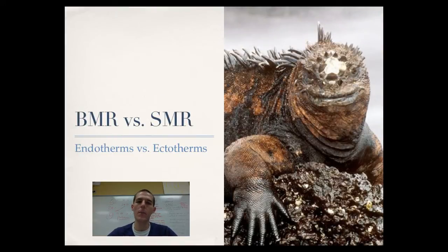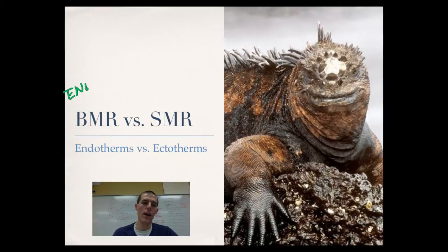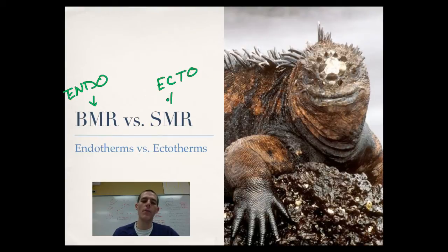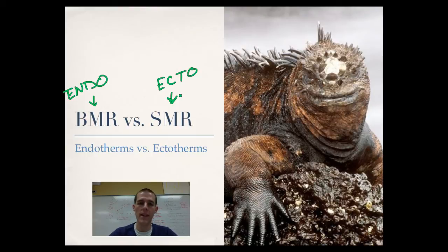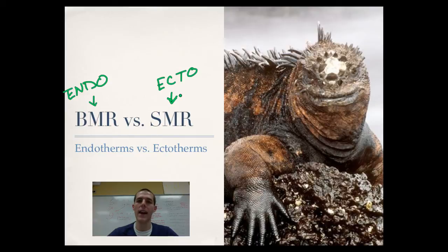This leads us to the idea of base metabolic rate. If you are an endotherm, you are known to have a base metabolic rate, or BMR. If you are an ectotherm, you have a standard metabolic rate. For the endotherm, they put the animal in a restful situation, relaxing, not having to do much, and then measure how much energy it uses to maintain its body temperature. Since the ectotherm's body temperature depends on its environment, they choose a standard temperature, like 72 degrees, and measure how much energy the animal uses at that temperature.